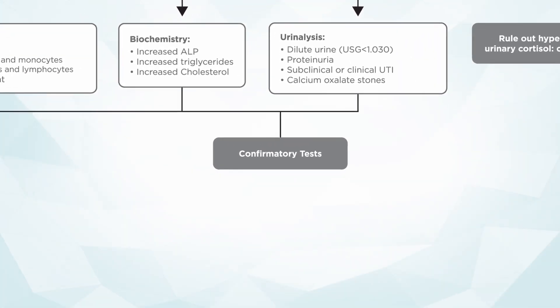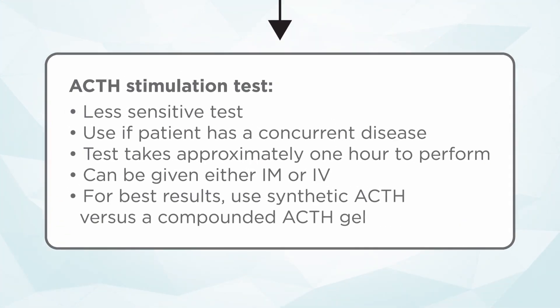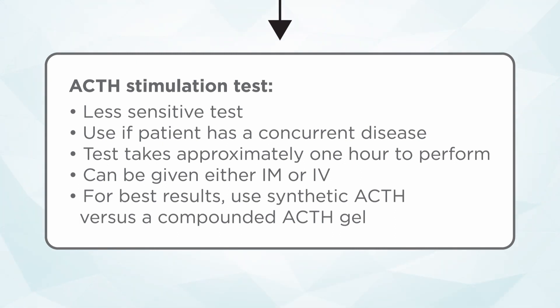Let's talk about the confirmatory tests available to help us diagnose canine Cushing's disease. There are two of them: the ACTH stimulation test and the low dose dexamethasone suppression test. You really need to optimize your testing — make sure these animals are as healthy as they can possibly be before you test them. Clear up any pyodermas or urinary tract infections and treat as many ancillary diseases as possible before doing adrenal function testing. The ACTH stimulation test, while less sensitive than the low dose dexamethasone suppression test, is more specific when there's a concurrent disease — and really the only concurrent disease that should be present is diabetes mellitus. So if you have a diabetic dog you think might have Cushing's disease, the ACTH stimulation test is the test to pick.